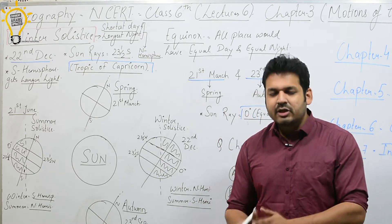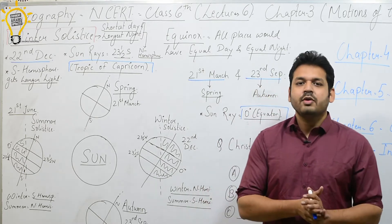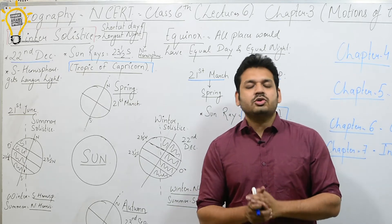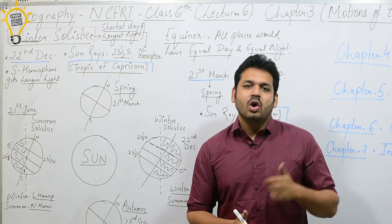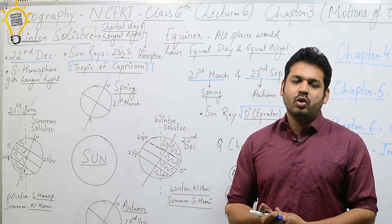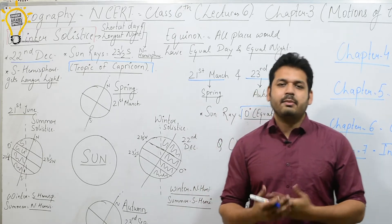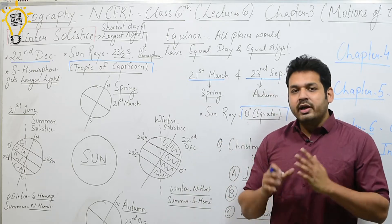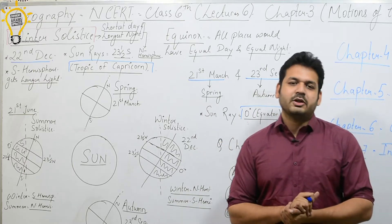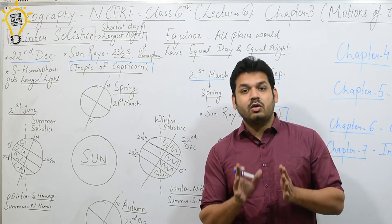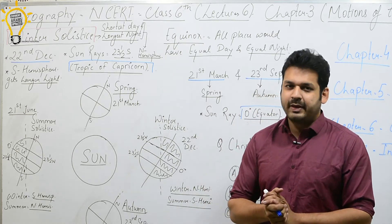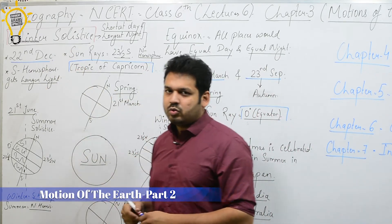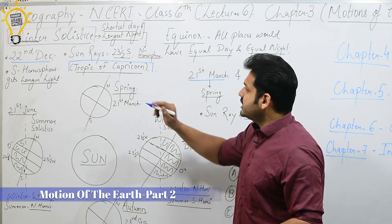We are dealing with the revolution part. The seasons we have already discussed — the summer solstice we have already discussed. Now we move on to winter solstice, autumn equinox, and spring equinox, which I am going to study today. All these things will be studied from the Northern Hemisphere perspective. Now we will cover winter solstice.